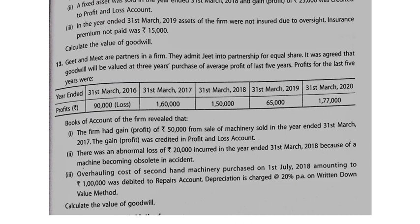Overhauling is like constructing additional floors on a building — it is capital expenditure, not revenue expenditure. You overhauled the machinery, added new parts, heavily maintained and modified it. But you treated it as revenue expenditure (repair), which reduced that year's profit incorrectly. The overhauling cost should have been capitalised as an asset.